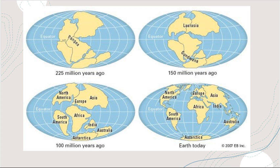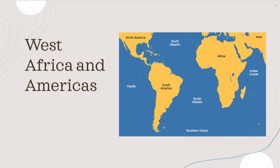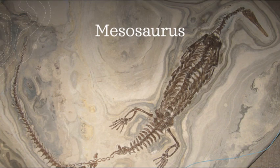In the year 1620, Sir Francis Bacon theorized that the coast of West Africa fitted excellently against the Atlantic coast of South and North America — the first clue that land masses might not always have been where they are now. The first person to formally propose that continental land masses moved was German meteorologist and geophysicist Alfred Wegener (1880–1930). In 1912, he pointed out that South Africa and Southeast Brazil have identical rock strata, and that fossils of the dinosaur Mesosaurus were found on both continents.